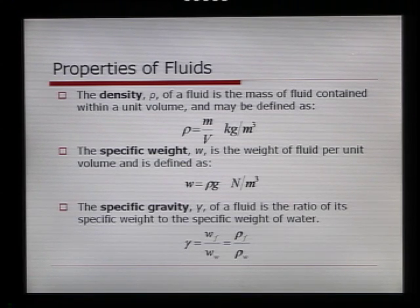Specific gravity, given the Greek symbol gamma, is the ratio of specific weight of a fluid to the specific weight of water, which therefore is also equal to the ratio of the density of the fluid to the density of water. So if we take, for example, mercury, which has a density of about 13,600 kilograms per metre cubed, we generally refer to its specific gravity as the number smaller, and therefore the specific gravity of mercury is 13.6.